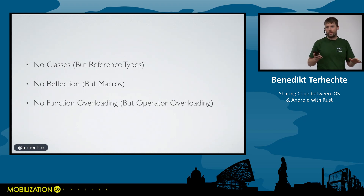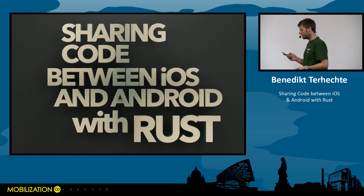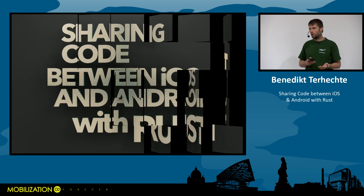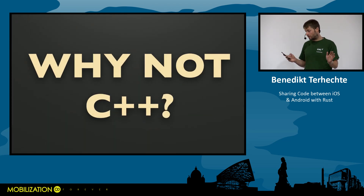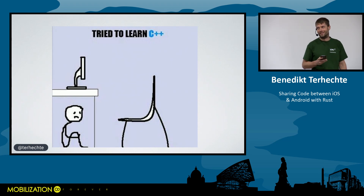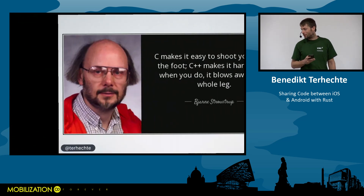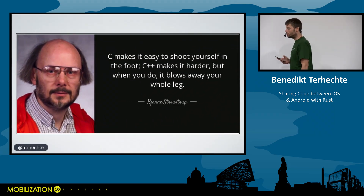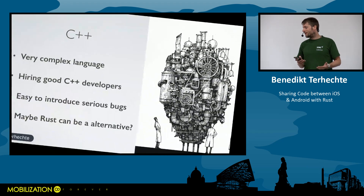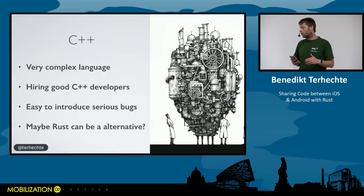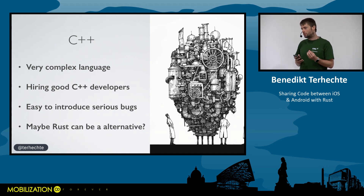Now, why Rust and not C++? I went to Google Image search and entered 'C++ memes.' The results included a quote from the inventor of C++ himself: 'C makes it easy to shoot yourself in the foot; C++ makes it harder, but when you do, it blows away your whole leg.' C++ is a fantastic but very complex language that has grown over years, and it's tricky to find good C++ developers — and without them, you get a lot of bugs.